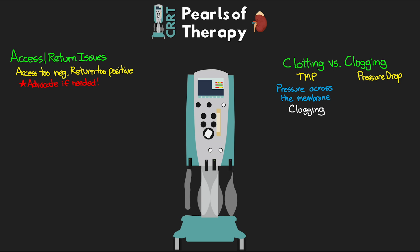If TMP hits a positive pressure of 350, it triggers an alert; above 450 triggers the alarm. This increasing TMP is measuring that the filter is clogging — as the filter clogs, those pores in the membrane fill up, requiring more and more pressure to move fluid across. Pressure drop, on the other hand, measures the pressure required to go through the filter — the change in pressure of blood entering and leaving the filter. The higher the blood flow rate, the higher the initial pressure going in. When pressure drop reaches 200 or higher, that triggers the alarm, indicating the filter is clotting.